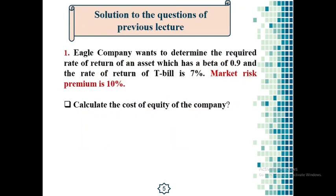Before starting today's lesson, I want to discuss the questions from my previous lecture that were your homework. Most of you answered correctly, but some of you had problems with the math. The first question is: Eagle Company wants to determine the required rate of return of an asset which has a beta of 0.9, and the rate of return of treasury bill is 7%, and market risk premium is 10%. We have to calculate the cost of equity of the company.